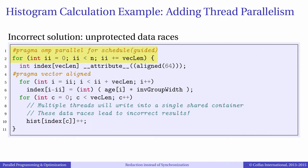The result will be a parallel application. However, if we compile and run this code we will quickly see that the application is not only very slow but also incorrect. The histogram produced by the parallel code is vastly different from the histogram produced by the single-threaded code, and furthermore the results will be different from run to run. This happens because in the inner loop we have a race condition.